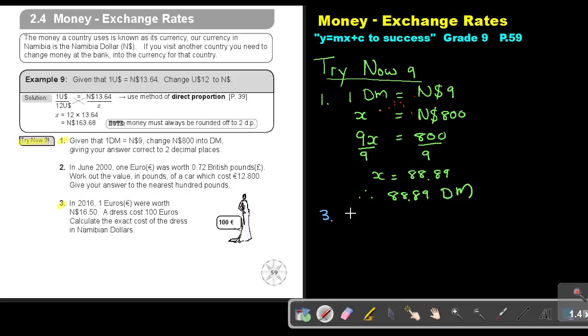Now let's start again with the first. 1 Euro was equal to 16.50 Namibian dollar.